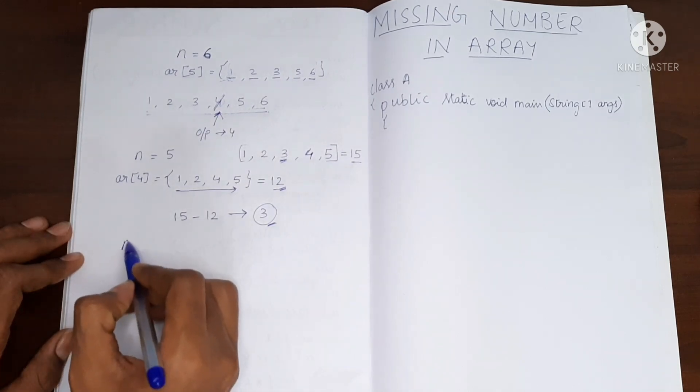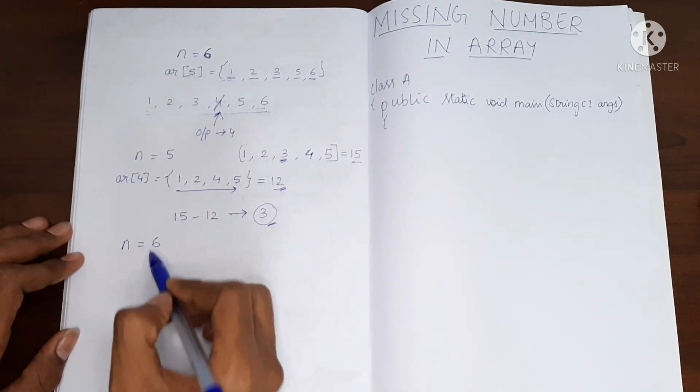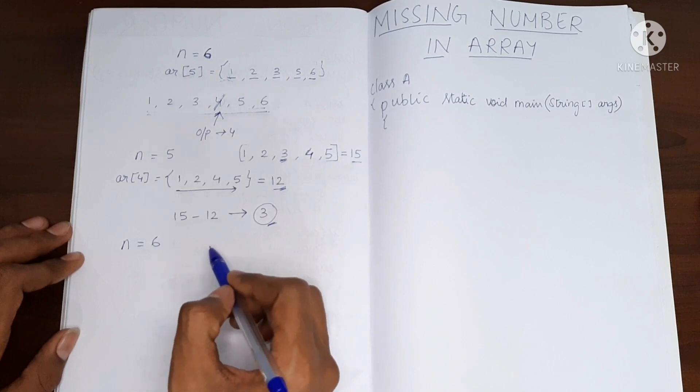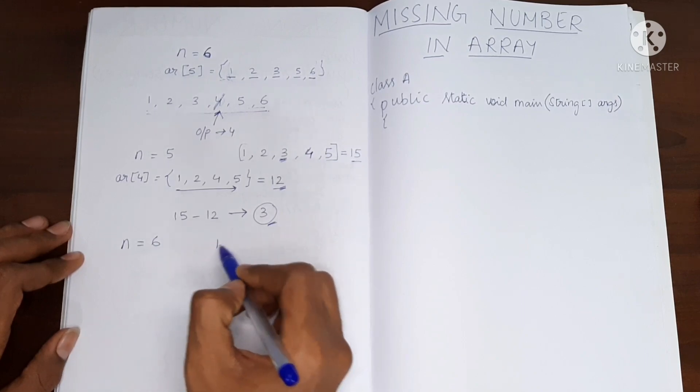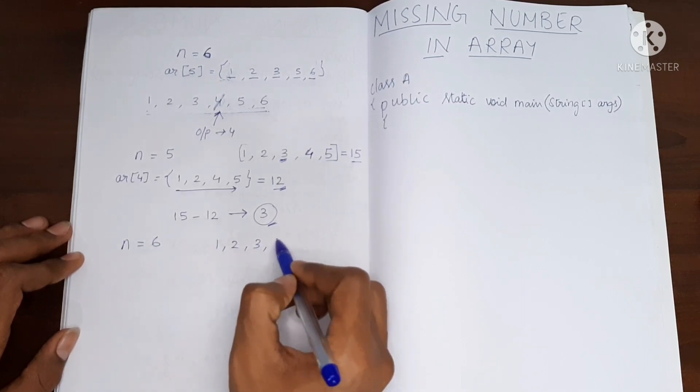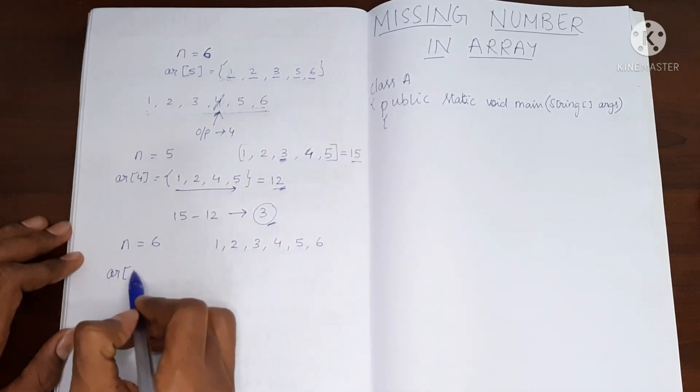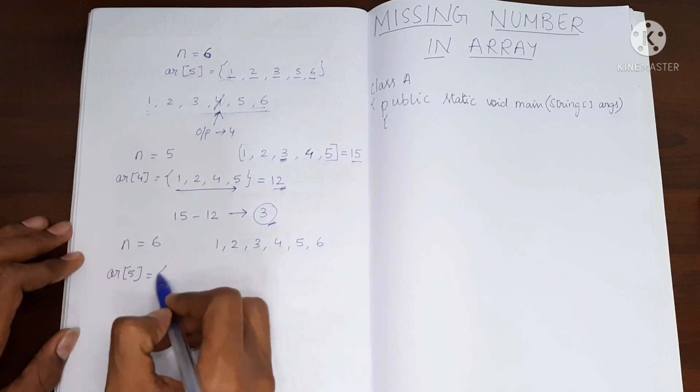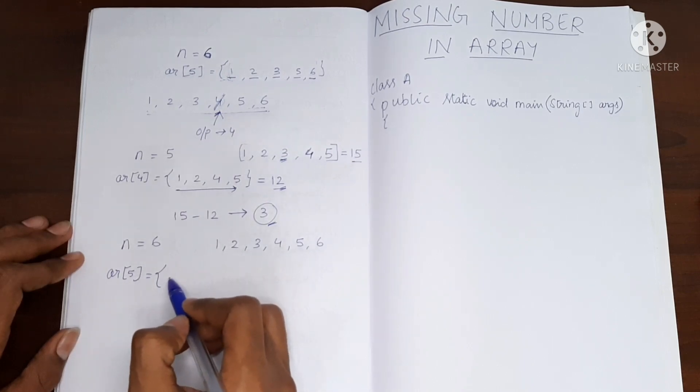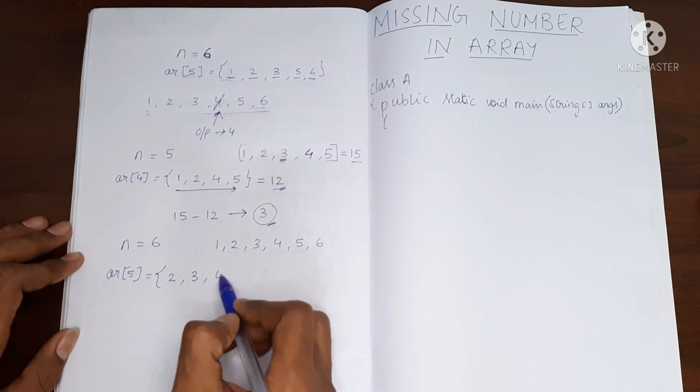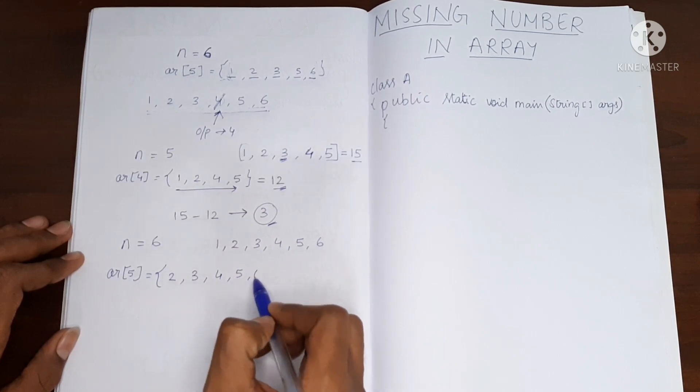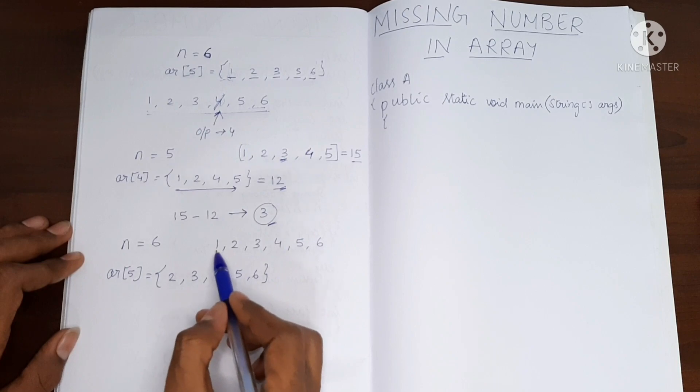Let me give you one more example. Let's say n is 6. What are the possible values? The possible values are 1, 2, 3, 4, 5 and 6. So the array size will be 5. And let's say it has the values 2, 3, 4, 5 and 6. So we have excluded 1.